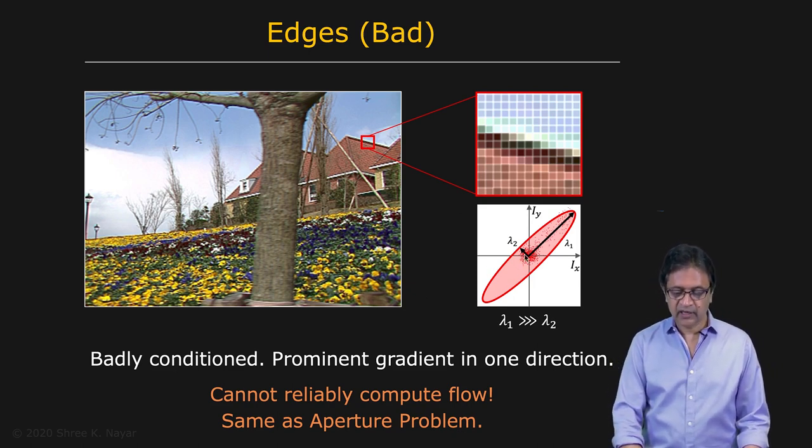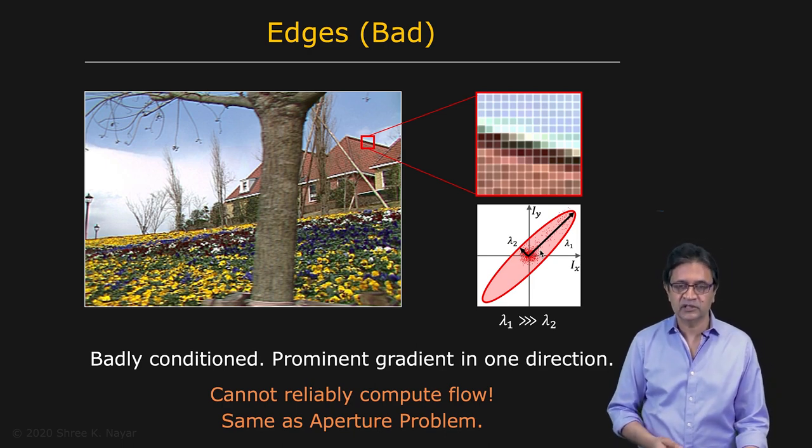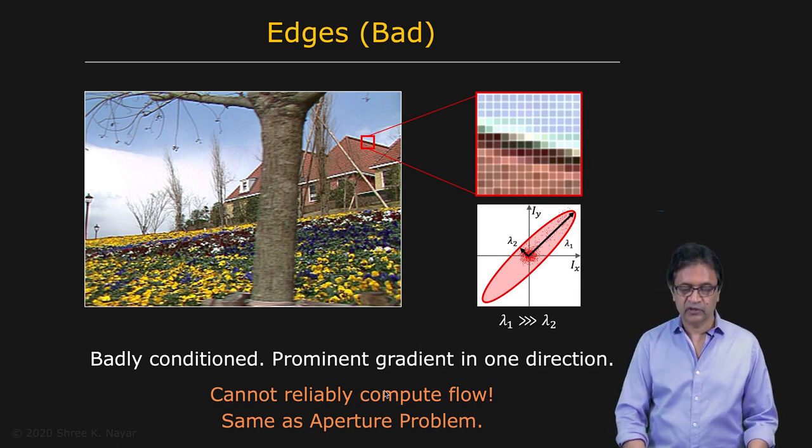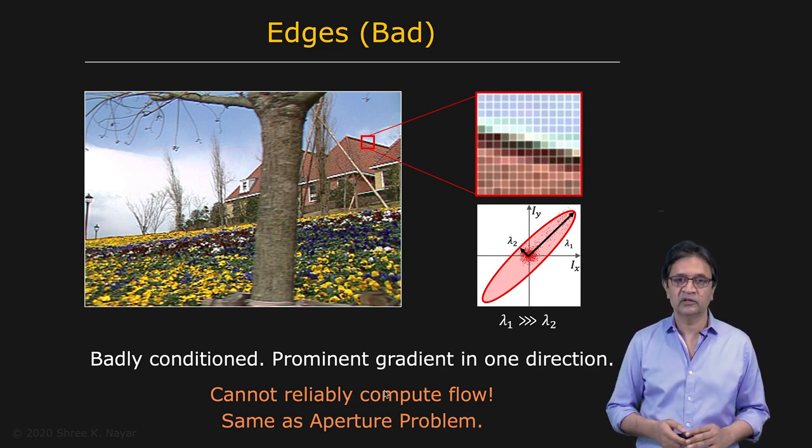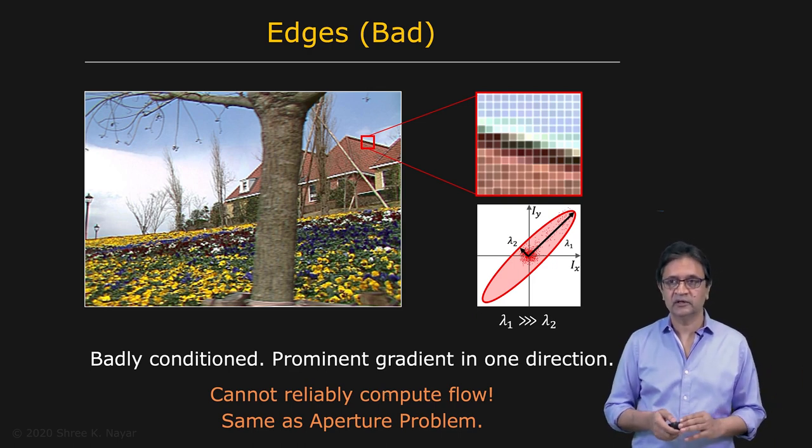And so this is again badly conditioned because in this particular case, one eigenvalue is significantly larger than the other one. Again, optical flow cannot be computed reliably. This corresponds to the aperture problem we talked about earlier.